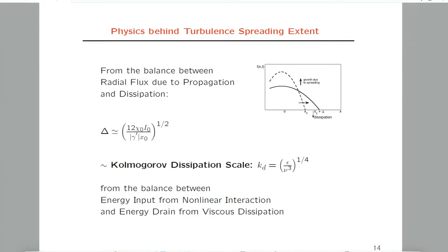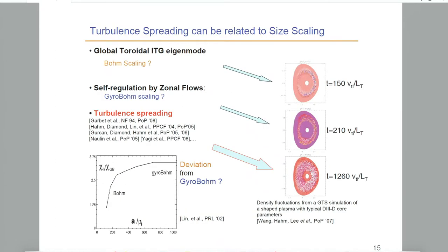The Kolmogorov dissipation scale is nothing but what we get from the balance between energy input from nonlinear interaction in the inertial range and energy drain from viscous dissipation. This is not really identical, but it involves turbulent intensity and the energy injection rate to a fractional power, and also dissipation to a fractional power. So there is some similarity to more well-known and generic situations.